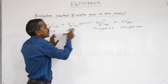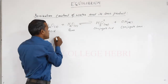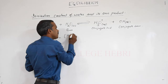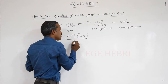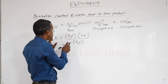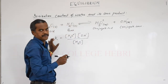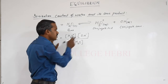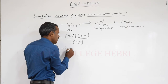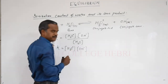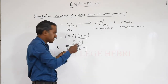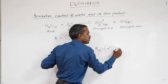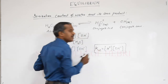There is an equilibrium between water and its conjugate acid and base. We can write the ionization constant K for this equilibrium as concentration of H3O+ times concentration of OH− divided by concentration of H2O. Since water is a pure substance, its concentration remains constant and we can ignore that denominator, so K equals concentration of H3O+ times concentration of OH−. Incorporating the concentration of water, we get a new expression: Kw equals concentration of H+ times concentration of OH−. This is called the ionic product of water.